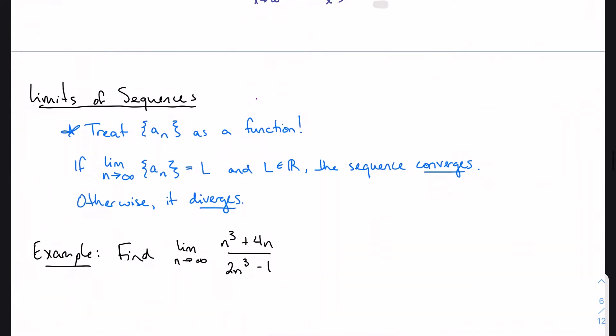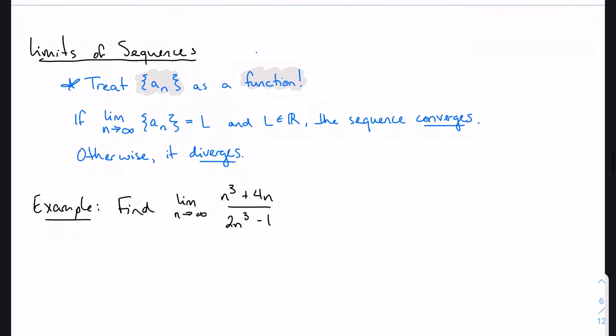We're actually just going to do one more example of this by talking about it in a sequence context. Don't freak out when you see sequences. There's no change here. We're just going to treat the general term of the sequence as if it's just a function. And we're just going to attach a couple words to this. So if my limit of the sequence actually approaches a number, and that number is a real number, we say that the sequence converges. Otherwise, we say that the sequence diverges.